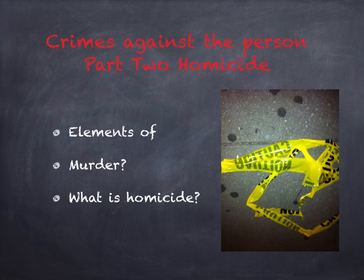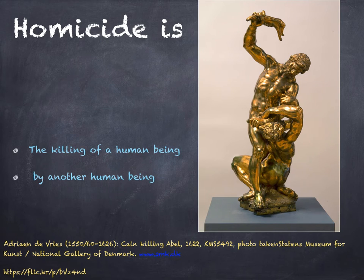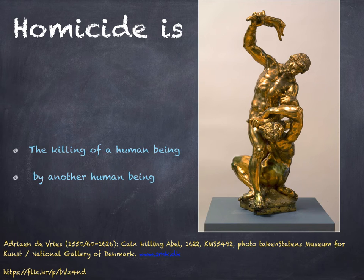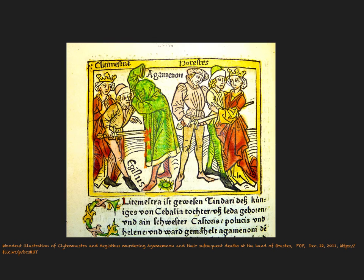What are the elements of murder? What's homicide? Homicide can be defined as the killing of a human being by another human being. Here is a bronze statue from the National Gallery of Denmark — it's a photograph of it — and this is Cain killing his brother Abel. It's an old story that might be based on truth about sibling rivalry gone wrong.